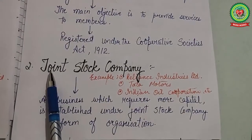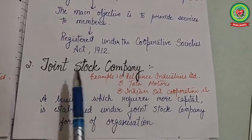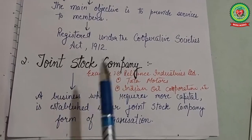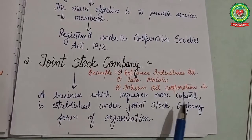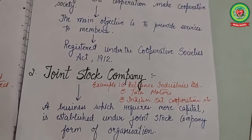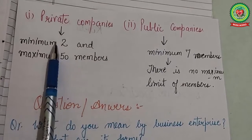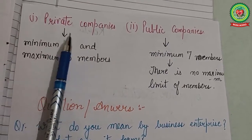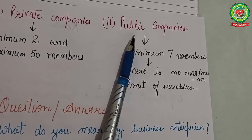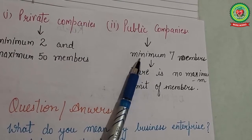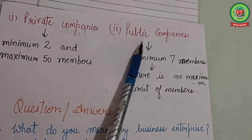Next is joint stock company. Examples include Reliance Industries, Tata Motors, and Indian Oil Corporation. A business which requires more capital is established under the joint stock company form of organization. These are of two types: private companies and public companies. A private company is required to have a minimum of 2 and a maximum of 50 members. A public company must have a minimum of 7 members, with no maximum limit.